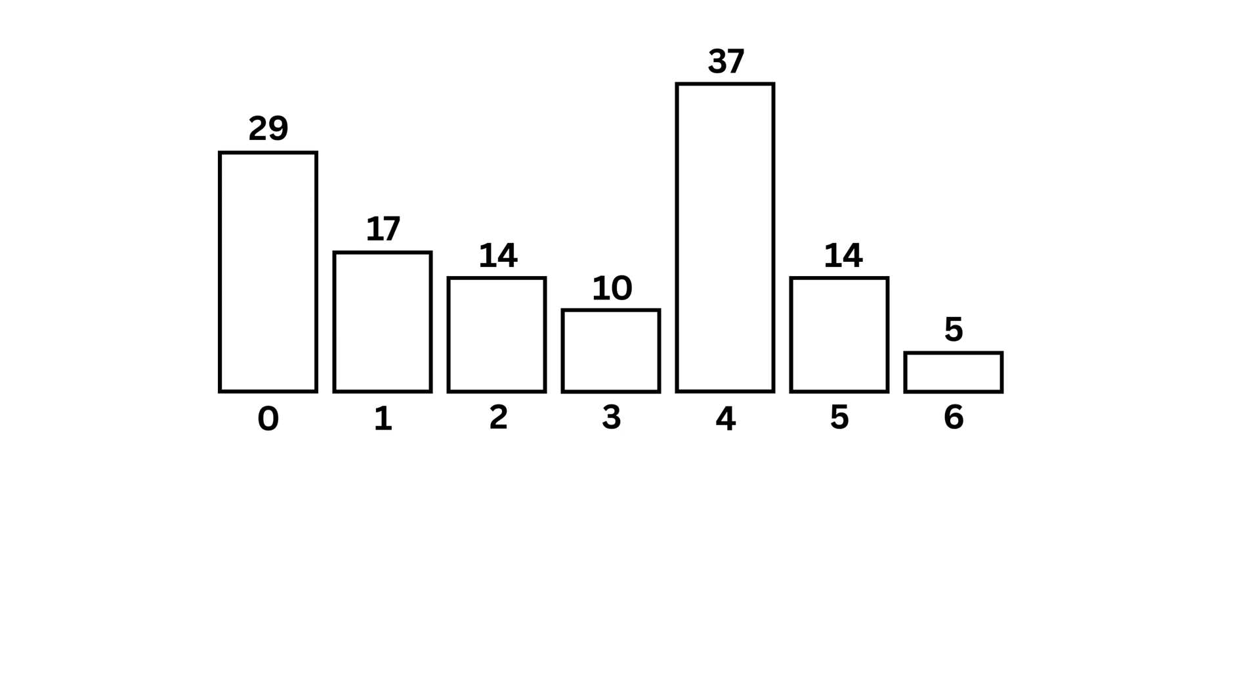In insertion sort, we go through each number one by one and insert it into its correct position among the numbers before it. For this, we use three variables: i, j, and temp.